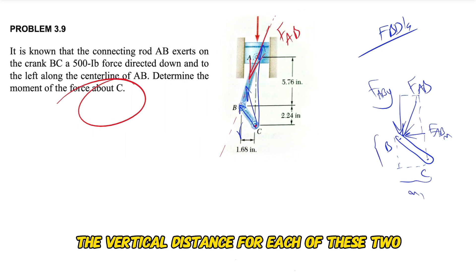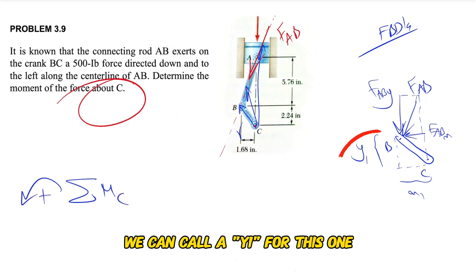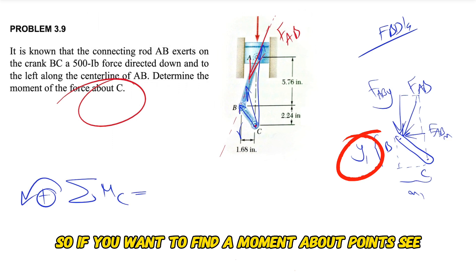And what we need for finding the moment is the vertical distance for each of these two, which means we need this distance. Let's call it x1 - we can call it y1 for this one.